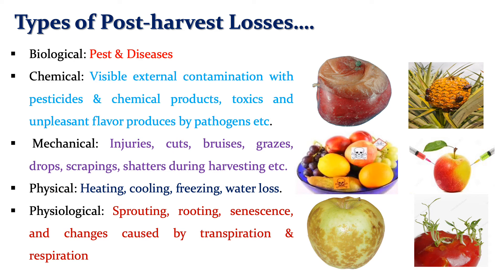What are the types of post-harvest losses? The first is biological losses — pests and diseases contribute to biological losses. Then chemical losses — visible external contamination with pesticides or chemical products, and toxic or unpleasant flavor produced by pathogens, contribute to chemical losses. Then mechanical losses — different injuries such as cuts, bruises, gouges, drops, cracking, and shattering during harvesting or due to poor transportation facilities and impact damage during handling contribute to mechanical losses. Physical losses include changes caused by heating, cooling, or freezing, such as weight loss, water loss, and texture changes.